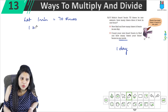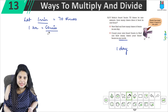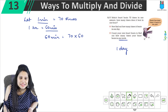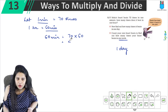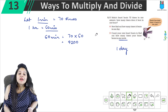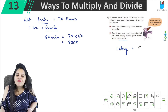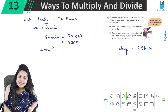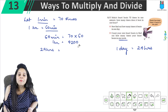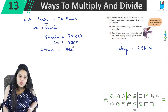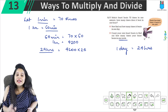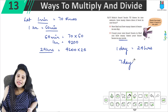If it beats 70 times in 1 minute, then in 60 minutes it beats 70 into 60. That gives us 42 with 2 zeros, so 4,200 per hour. We know 1 day has 24 hours, so in 1 day it will be 4,200 into 24. We multiply 42 by 24: 4 into 2 is 8, 4 into 4 is 16, 2 into 2 is 4, 2 into 4 is 8. Adding gives us 1,008 with 2 zeros, so 100,800 beats per day.